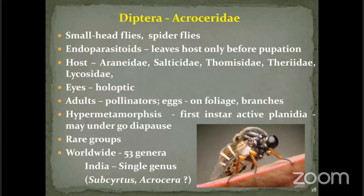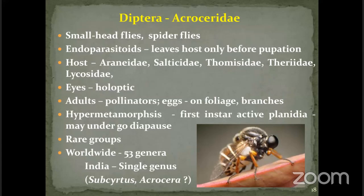Around the world, there are 53 genera known from Acroceridae, and only a single genus — Subulicephala — is known from India. Acrocera is a widely distributed genus, so it might occur in India also. The diversity of Acroceridae in India is still to be studied — we really don't know how many species are known from India.